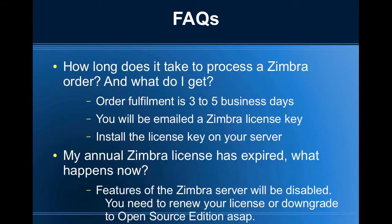How long does it take to process a Zimbra order and what do you get? Order fulfilment is generally three to five business days. You get emailed a Zimbra licence key which you then install on your server. There's no need to install any additional software or restart the server.